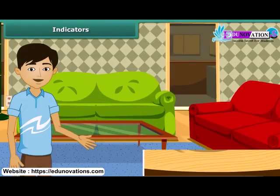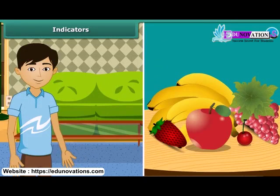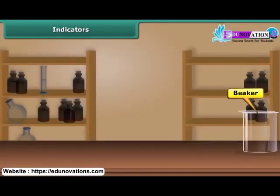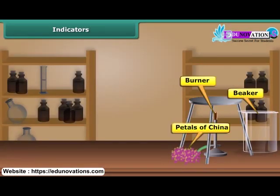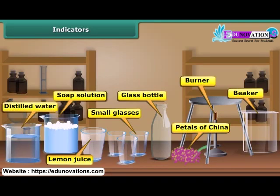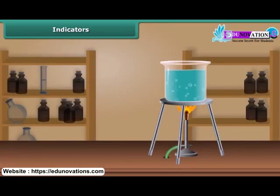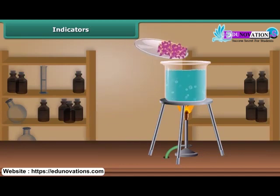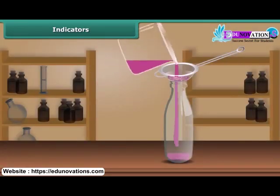How can you find that a fruit is acidic or basic? You can easily test the acidic or basic nature of a substance by making a simple indicator solution at home. You will need a beaker, gas stove, petals of China rose, a clean glass bottle, three small glasses, lemon juice, soap solution, and distilled water. Pour some distilled water in a beaker and heat it on the gas stove until warm. Then add petals of China rose and keep the mixture until the water becomes colored. Filter this purple-red water into a bottle using a tea strainer.